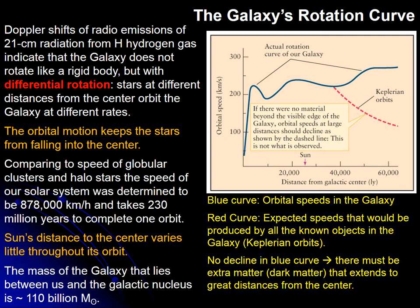The velocity of the stars varies somewhat depending on where they are with respect to the center. This graph shows the orbital speed in kilometers per second as a function of distance from the center. Stars near the center have very small speeds, but those speeds rapidly rise to a maximum, then show oscillations with a generally growing trend. On average, stars farther away are faster than those closer in, but the difference is not as dramatic as it is near the center.